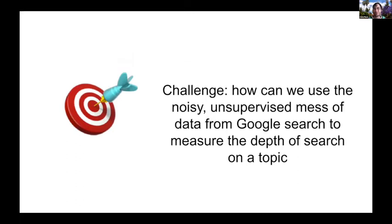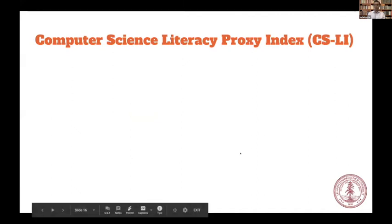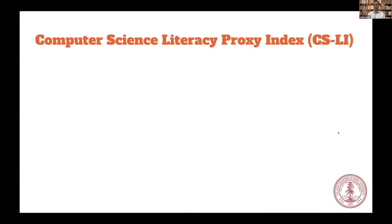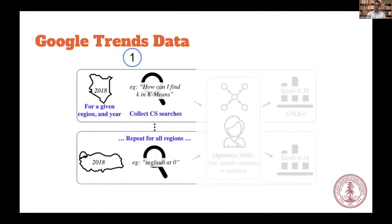So Serhat, how could we use all this messy unsupervised data to measure depth of computer science literacy? We propose a computer science literacy proxy index, which uses search data from the internet to estimate average computer science literacy around the world. I'll explain it in three stages: first, exporting data from Google Trends; second, the processing method we use to minimize our estimation error; and at the end, we generate a score for every country that represents per capita CS literacy in that country.